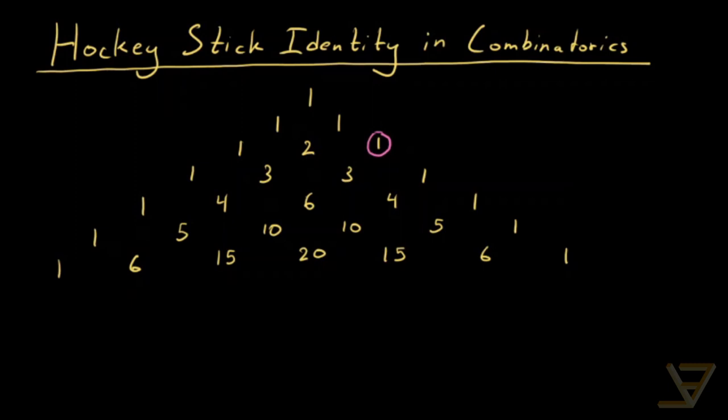So we have the second row here if we start with row zero, and then what we do is we go to the left and down by certain increments, so by one increment here. So we have three, we have six, we have ten, and at some point we stop.